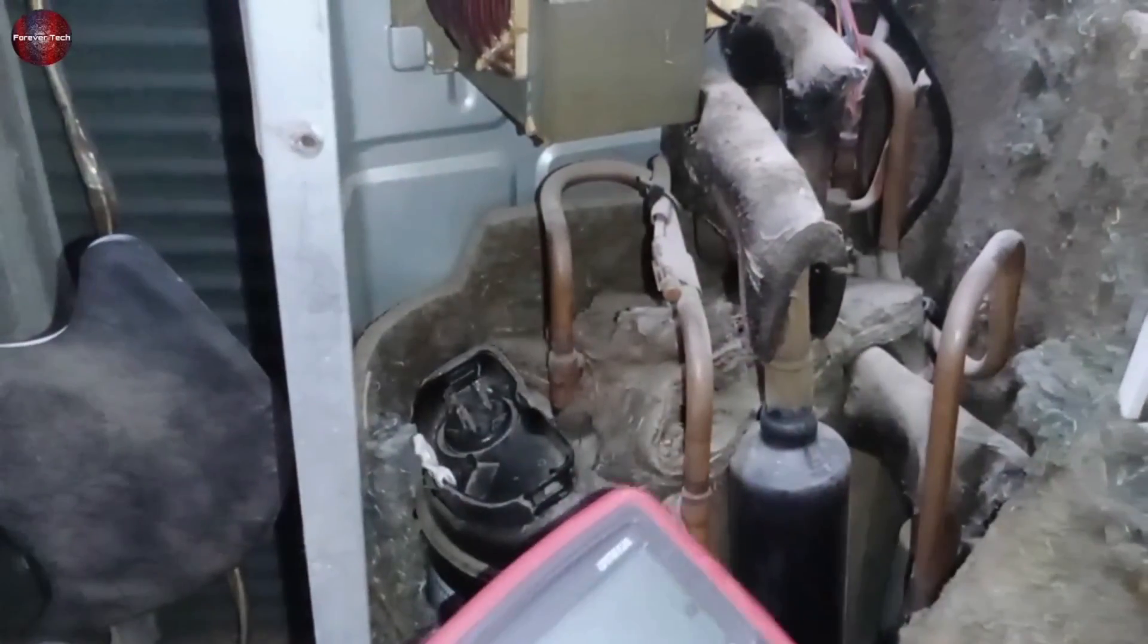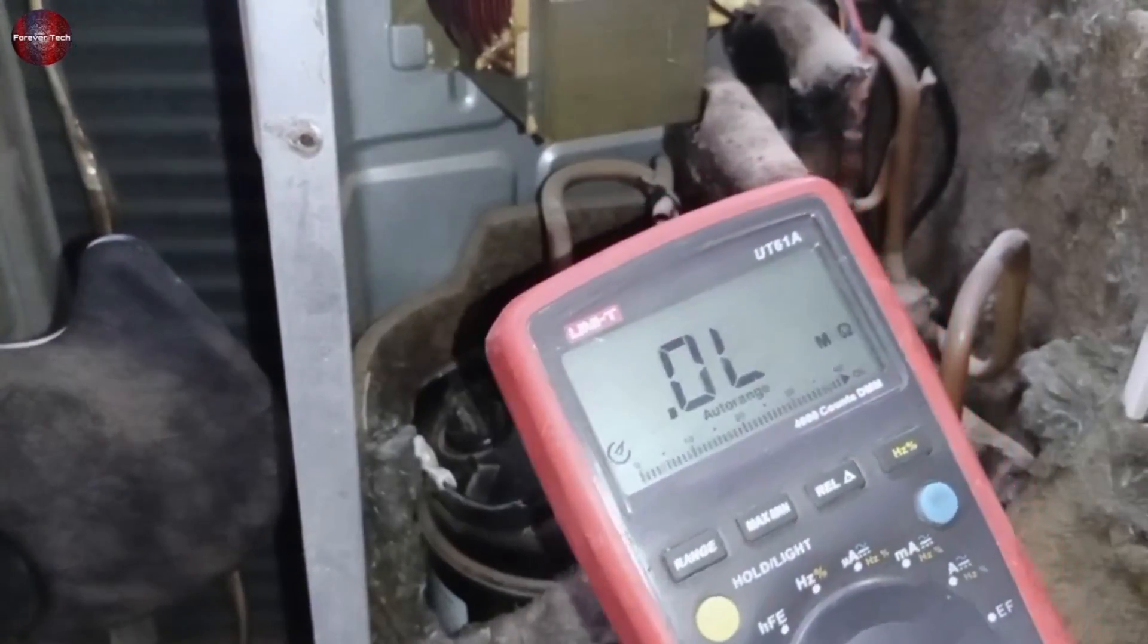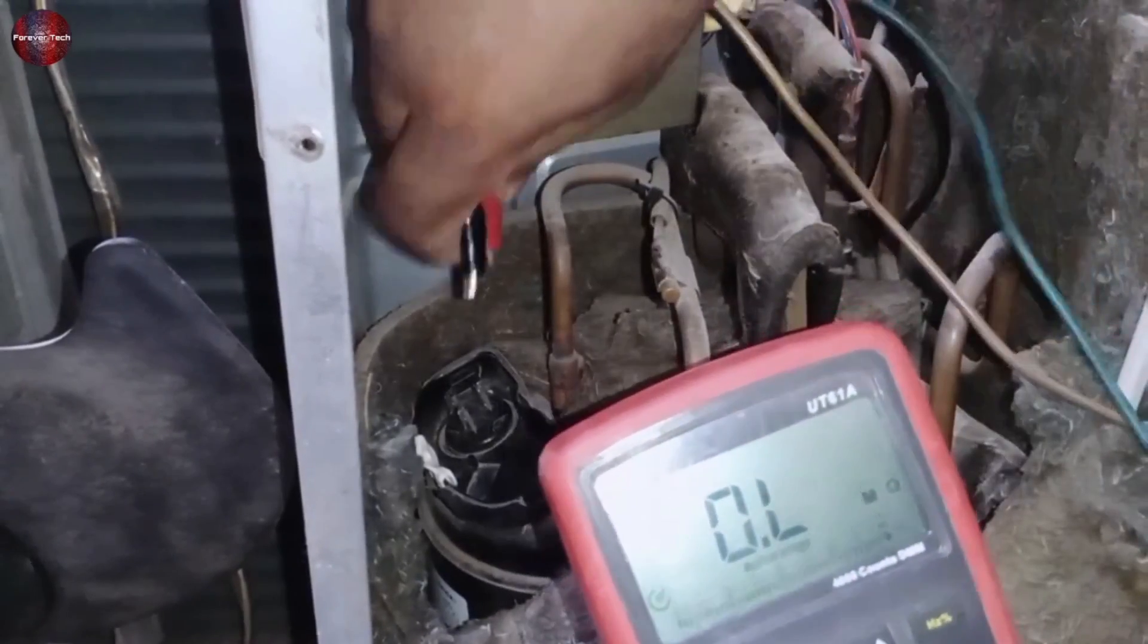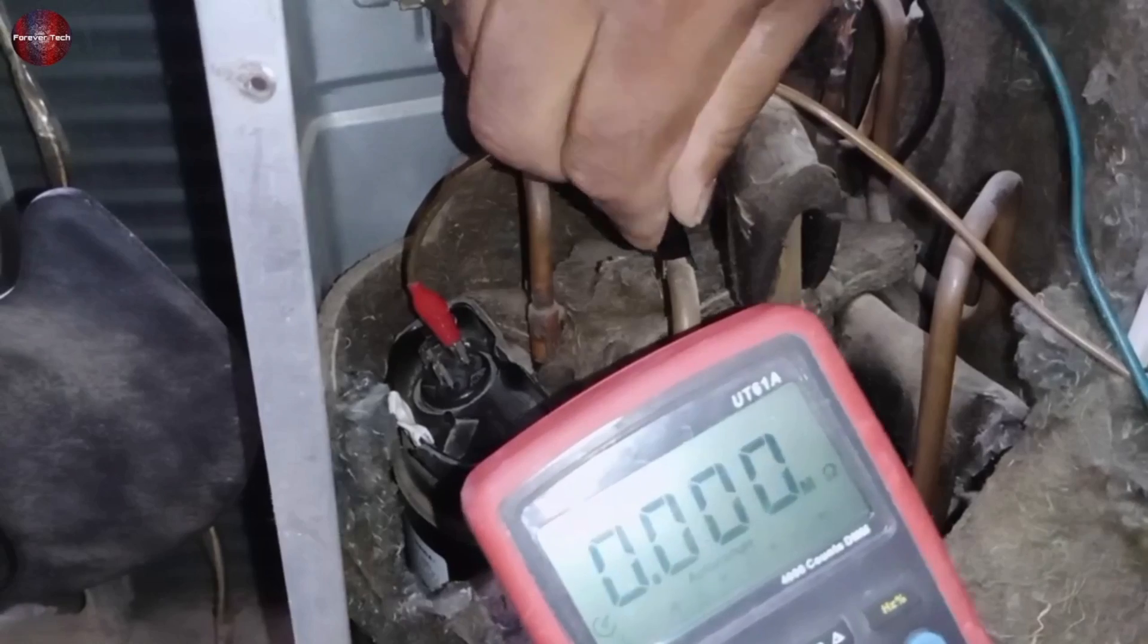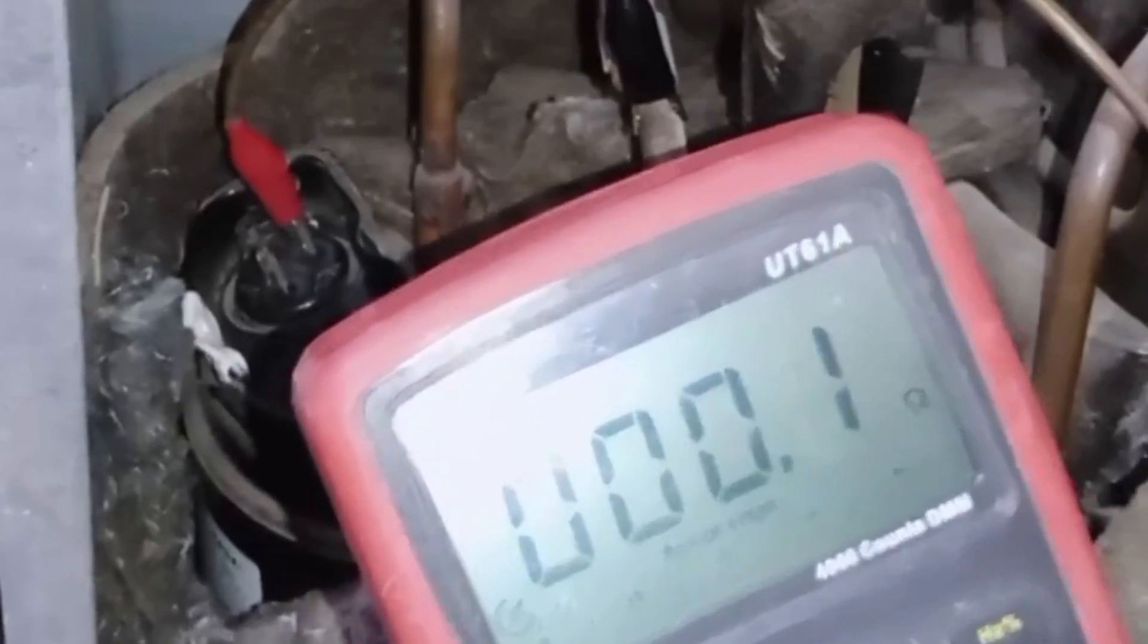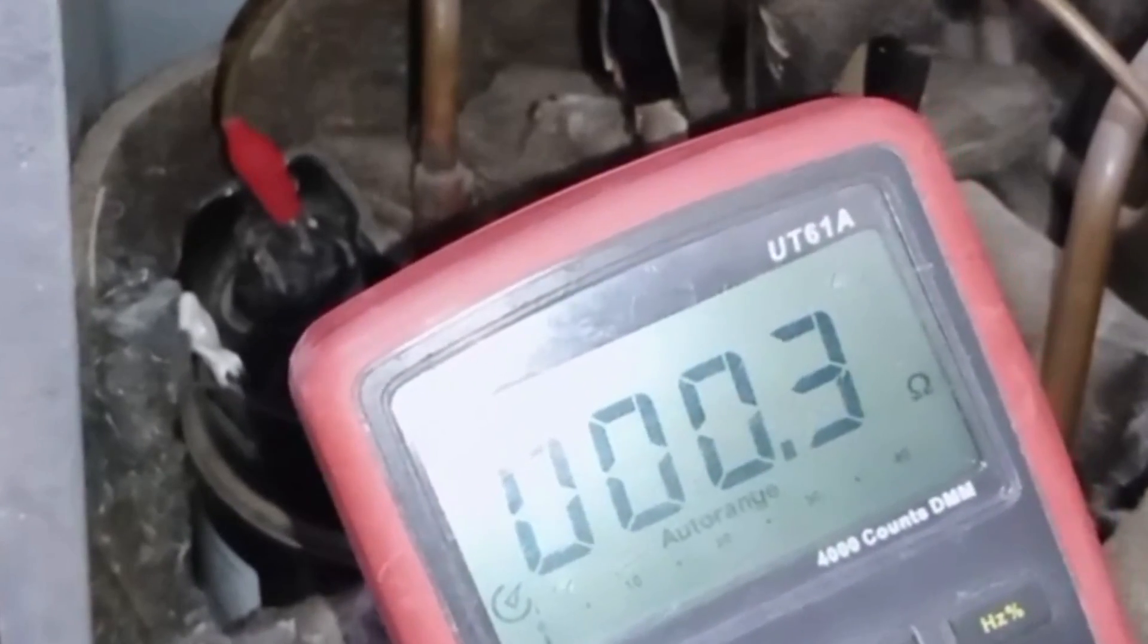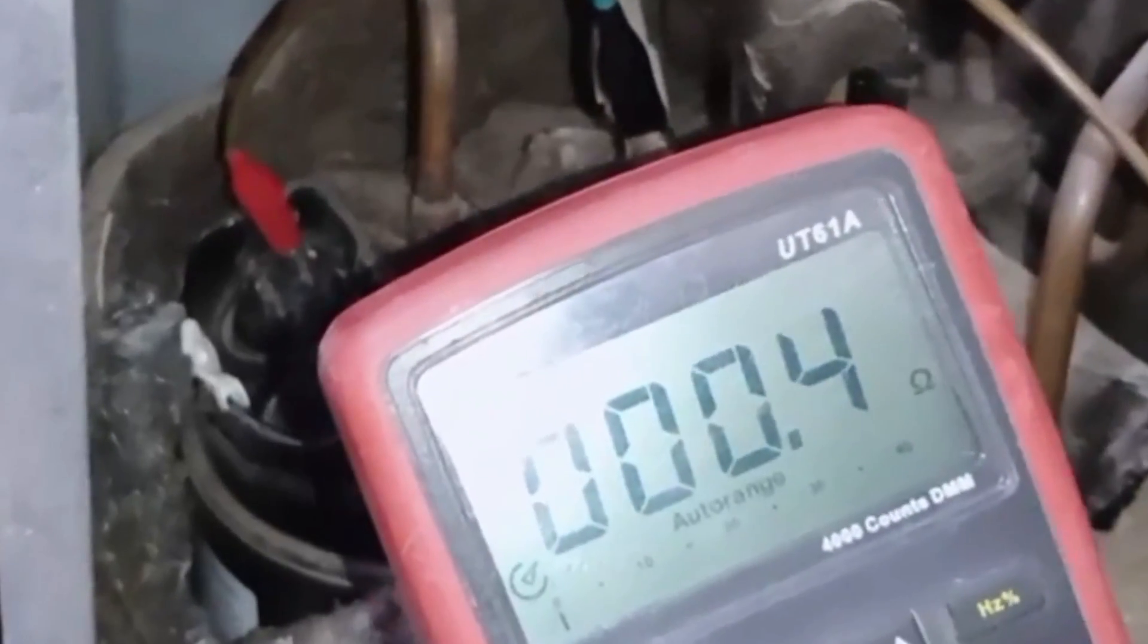Again set the multimeter on ohms and attach any one probe of the multimeter with the terminal of the compressor. And when we touch the second probe with the pipe body, the multimeter is showing us a reading. See, its winding has been leaked and shorted.